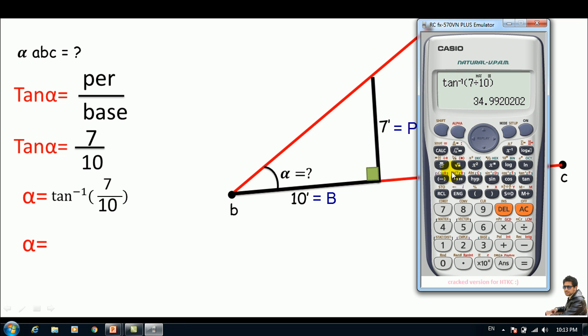I click this button showing the degree, minute, and second. And let me click this. So this is 34 degrees, 59 minutes, and 31.27 seconds.